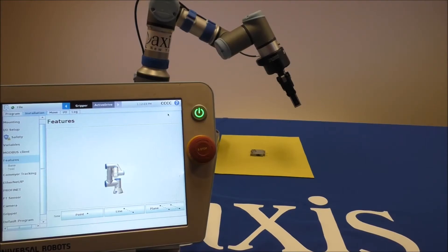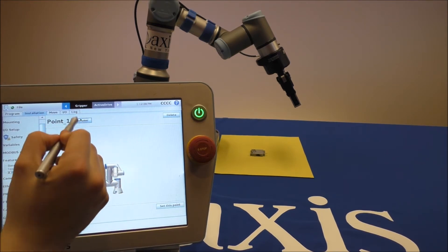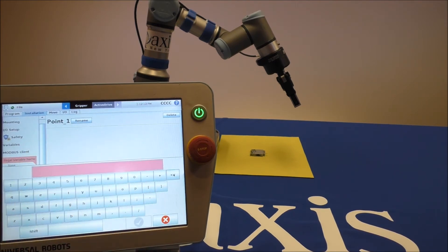Our first step is to create a feature point. So we will create a new feature point and rename it to something meaningful. Here we're going to call it snapshot position.